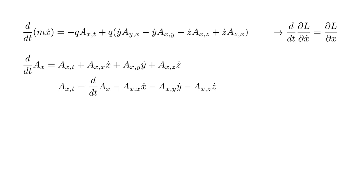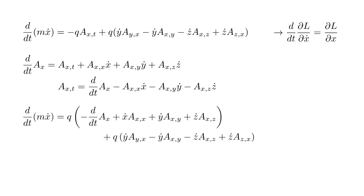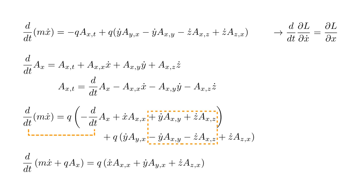We solve this equation for A_X comma T and substitute into the top equation. This gives us D by D T of M X dot equals Q times the solved expression for A_X comma T, plus the remaining terms from the right side of the top equation. We combine the D by D T terms and put them on the left side. We also see that four of the terms on the right sum to zero. This leaves us with D by D T of quantity M X dot plus Q A_X, equals Q times the quantity X dot A_X comma X plus Y dot A_Y comma X plus Z dot A_Z comma X.